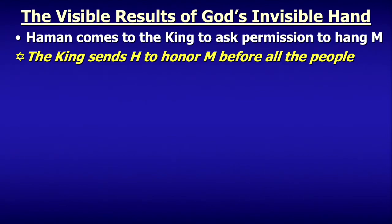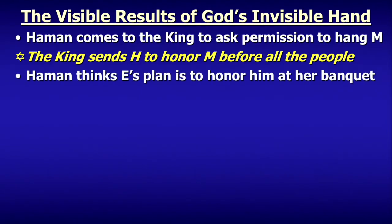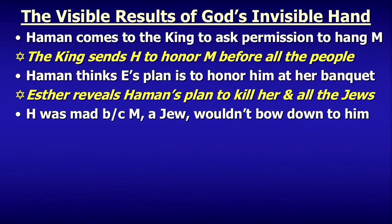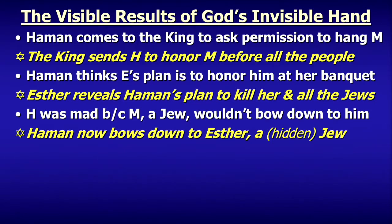Haman comes to the king to ask permission to hang Mordecai — he's got the gallows all ready. But to his surprise, the king sends Haman to honor Mordecai before all the people. Haman thinks Esther's plan is to honor him at the banquet. It's at that very banquet that Esther reveals Haman's plan to kill her and all the Jews to the king, who was unaware of it. Haman was furious because Mordecai, a Jew, wouldn't bow down to him. God took that and turned it on its ear — Haman is now bowing down before Esther, who is a Jew.